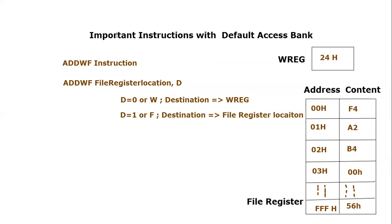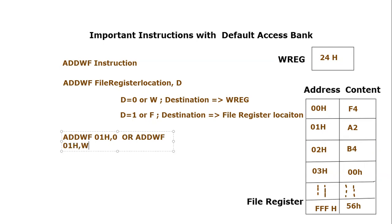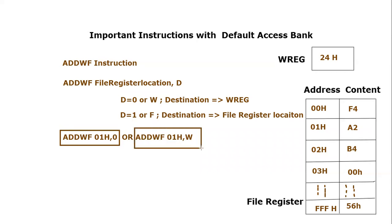Let's add one of the locations present here. We want to add the content of location 01 hex, which is A2, with the working register, and save the result in the working register. We will write: ADDWF 01h, 0 — or alternatively ADDWF 01h, W. These are two different ways to write the instruction to add the working register with a file register location and store the result in the working register.